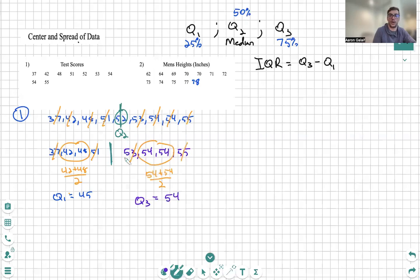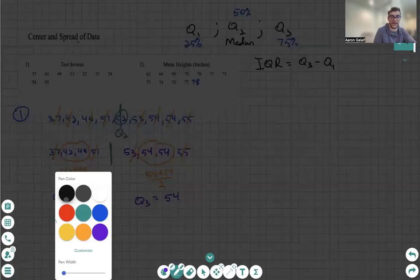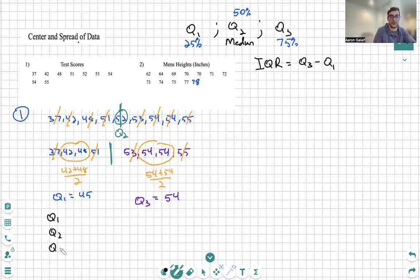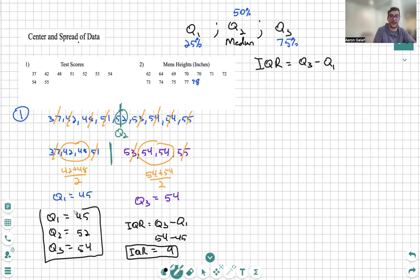Beautiful. So we have Q1, Q2, Q3. We're going to rewrite them all right here. Q1 is 45, Q2 is 52, Q3 is 54. And then lastly our IQR is just going to be Q3 minus Q1, which is 54 minus 45, equal to 9. That is what the IQR is equal to in that situation. We have found our different quartiles and we have found our IQR. Let's do the same for number two.